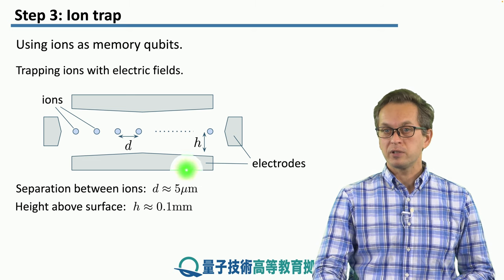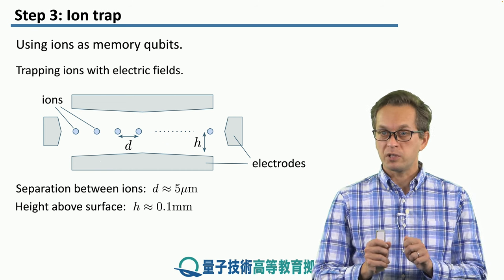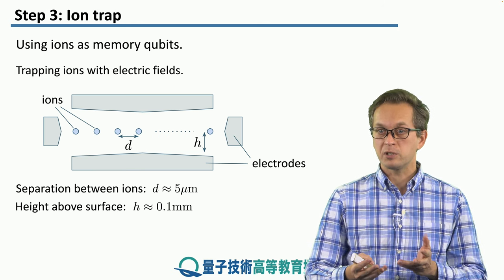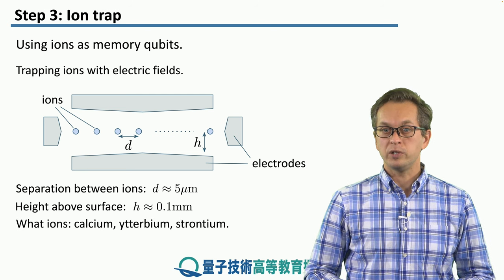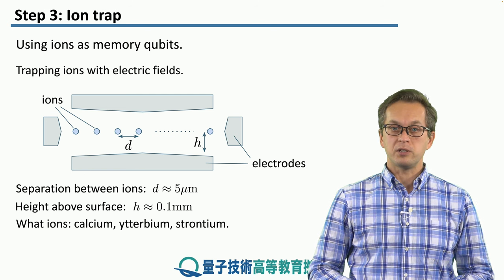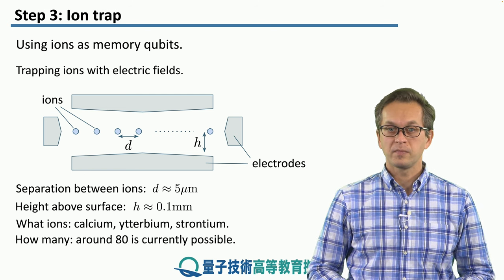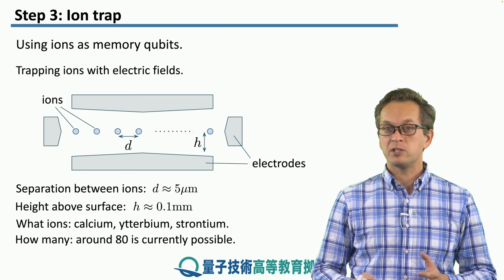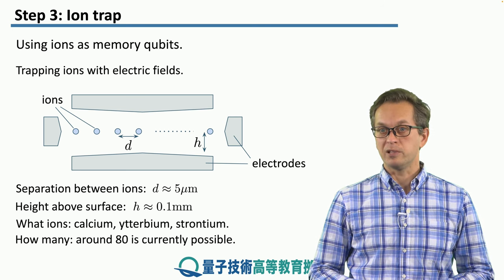This trap itself has nothing quantum about it — it's a classical machine, but highly complex with lots of electrodes which are very carefully controlled to ensure the stability and position of the ions. What types of ions do we use? There are many different possibilities, such as calcium, ytterbium, or strontium. In terms of the number of qubits that can be present in a trap, it can range anywhere from only a few qubits all the way up to around 80 qubits, which is currently possible.